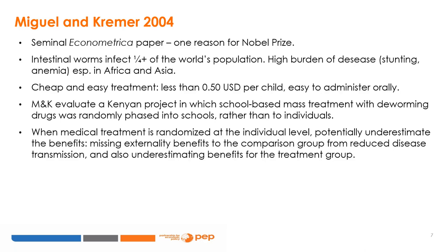Miguel and Kremer evaluate a Kenyan project in which school-based mass treatment with deworming drugs was randomly phased into schools rather than to individuals. When treatment is randomized at the individual level, we potentially underestimate the benefit because we miss the externality benefits to the comparison group from reduced disease transmission, and also underestimate the benefits for the treatment group.